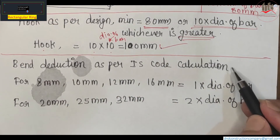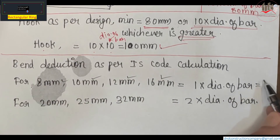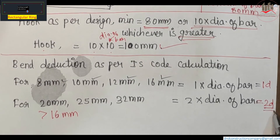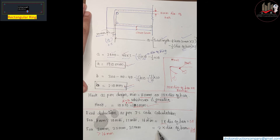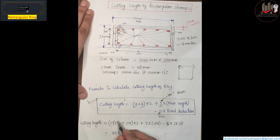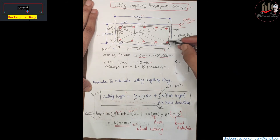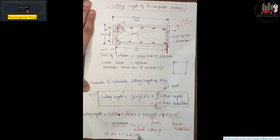So friends, bend deduction as per IS code: for 8 mm, 10 mm, 12 mm, and 16 mm bars we have 1D, and for greater than 16 mm we have 2D (diameter of bar). We have the value of A, value of B, hook = 100 mm, and 1D or 2D bend deduction. Putting all values together, the total cutting length comes to 4390 mm. This is our actual cutting length, calculated to the center of the bar for more accuracy, as per IS code.